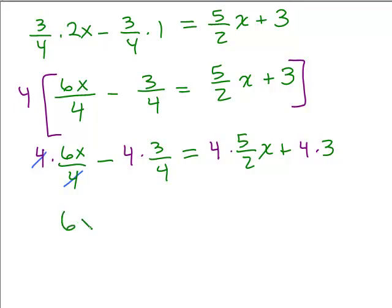So we have 6x minus, those 4s cancel completely, so I'm going to have minus 3 equals 10x plus 12. The 2 goes into the 4 twice, so I have 2 times 5 times x, that's 10x. And I just have 4 times 3, which is 12.